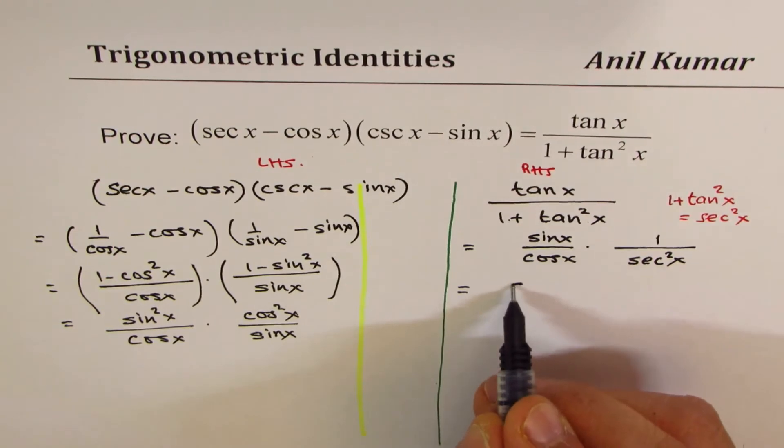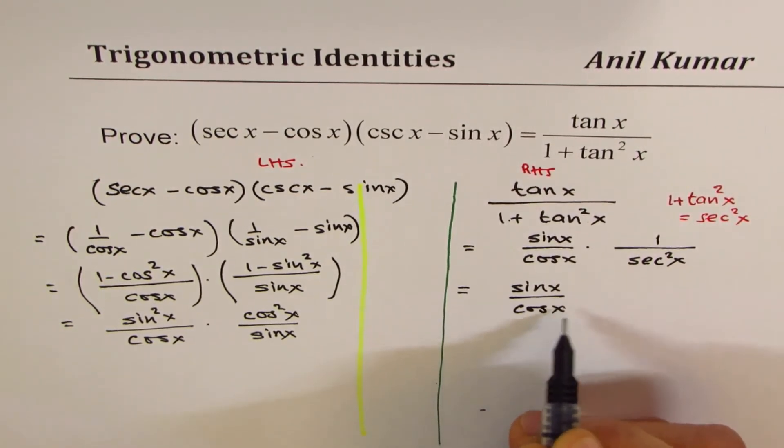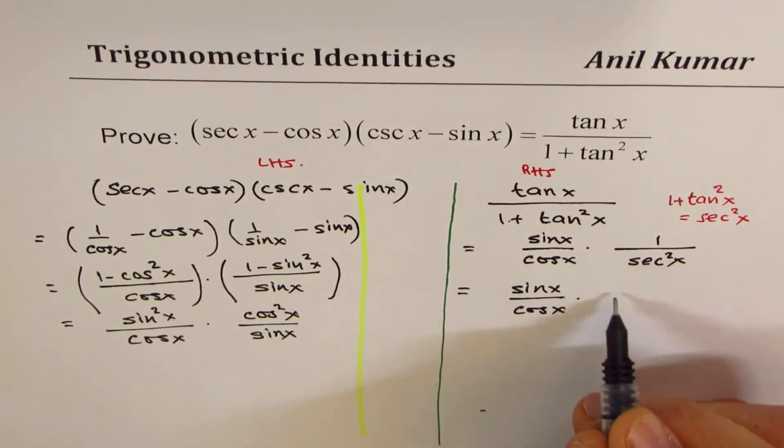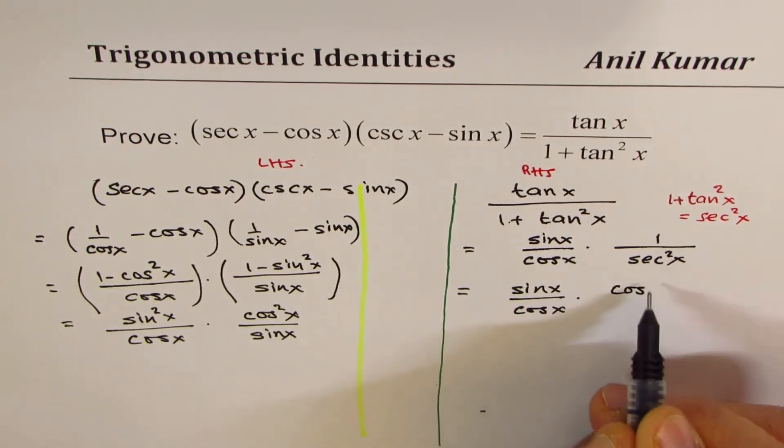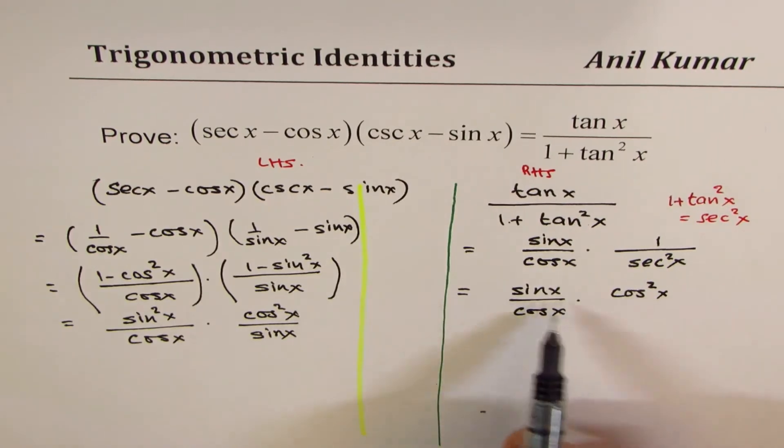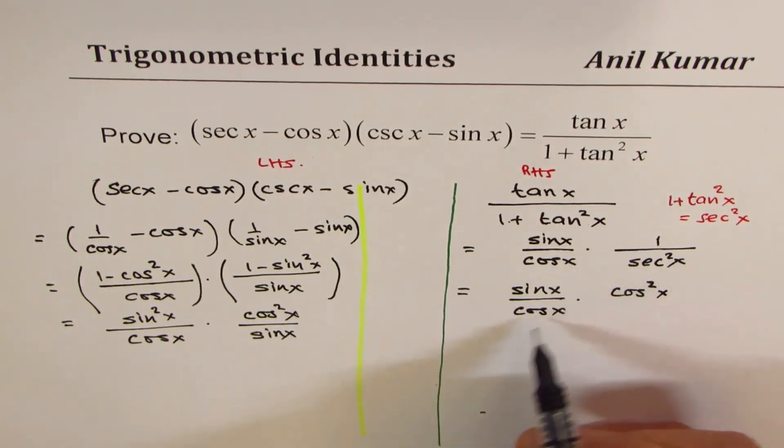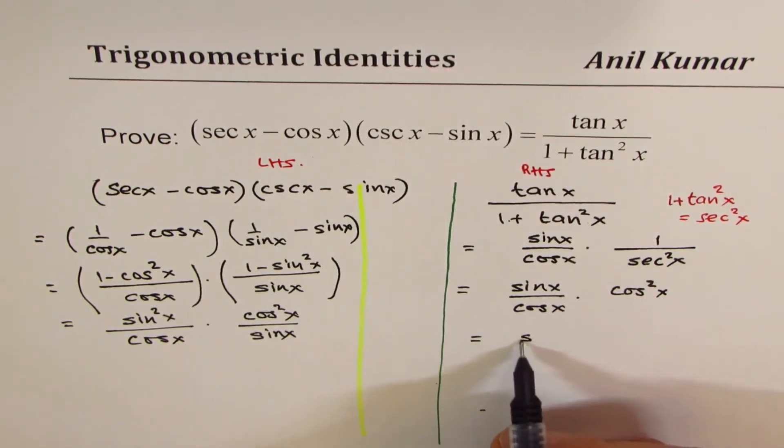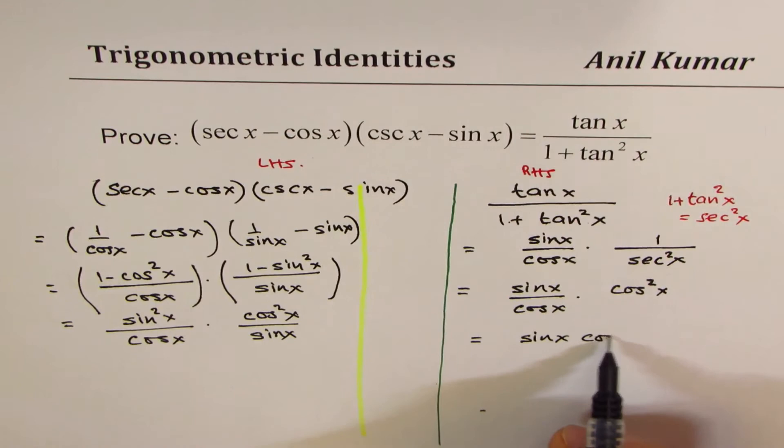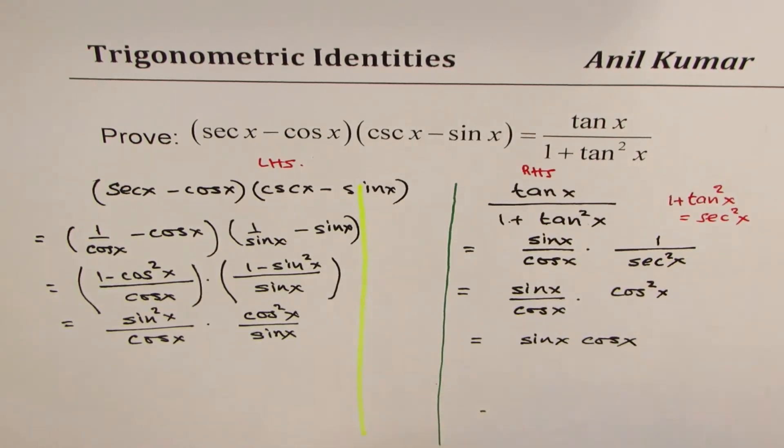Now, we have sin x / cos x. Secant is 1 / cos, so I could write this as cos²x. What we get is (sin x / cos x) times cos²x. We could cancel one of these cos terms and we get sin x cos x.